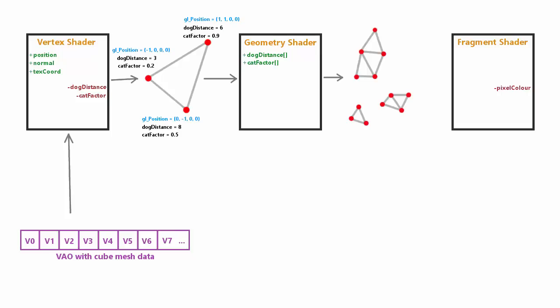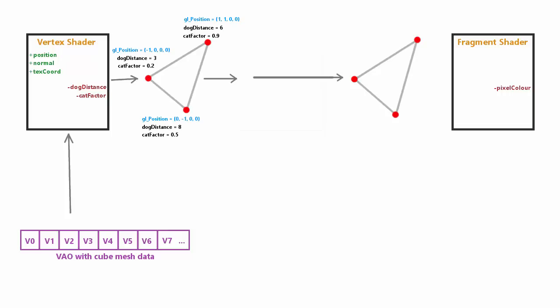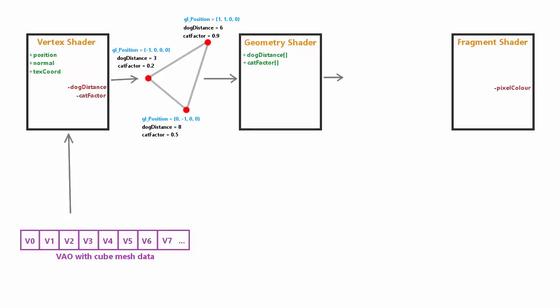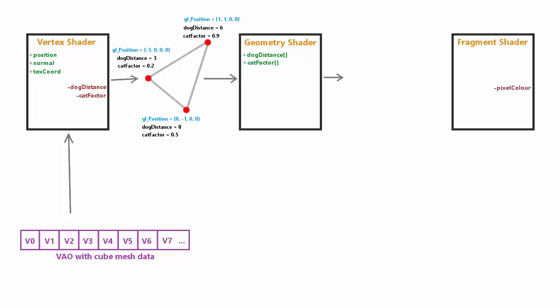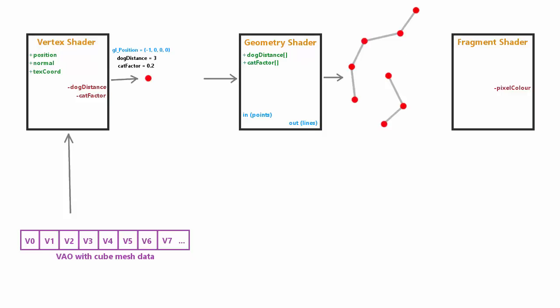The geometry shader uses its inputs to process the primitive however we want, then generates and outputs some primitives. The type, quantity, and shape of the output primitives is totally up to the programmer. We could output the same triangle, or process each triangle and output 3, 6, or however many we want — even 0, to remove geometry. It doesn't have to output the same primitive type as its input. For example, for each point it could generate two triangles or some lines. The only restriction is that it can only have one output primitive type: triangles, lines, or points — not a mixture.